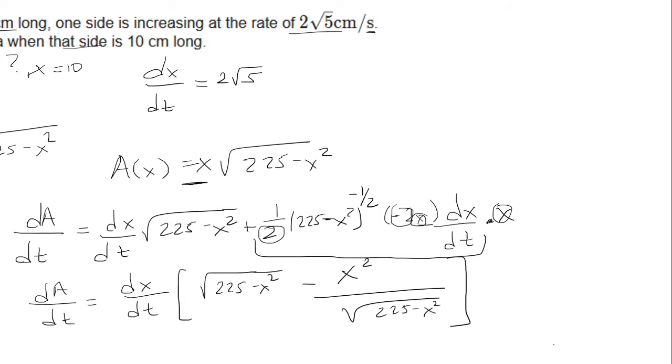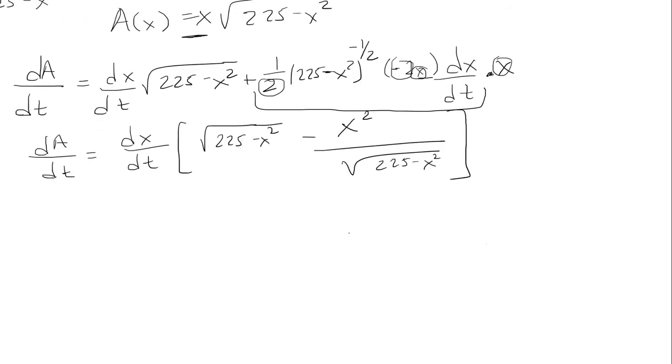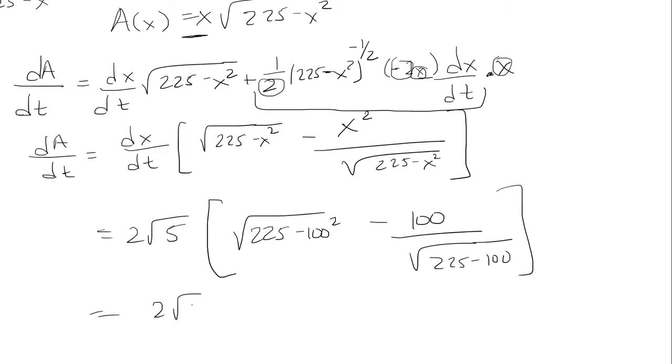Now we need to plug in what X and dX over dT are. So that is actually what is given for us. We know that dX over dT was 2 root 5. And X we want to see when it's 10. So we're going to plug that in. So we have 2 root 5 out here. And then we have the square root of 225 minus... Oops, that should be 100. So that would be root 125 minus 100 over root 125.